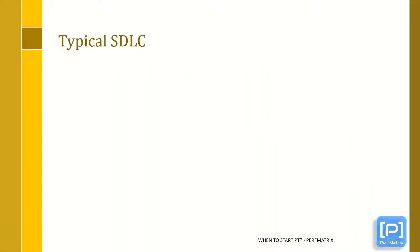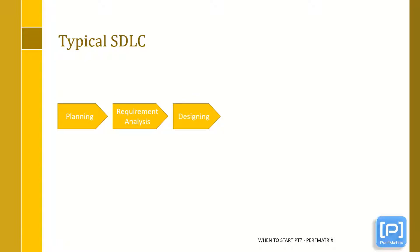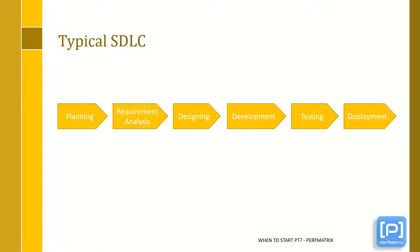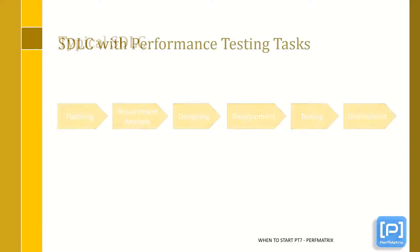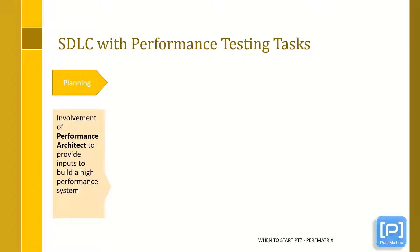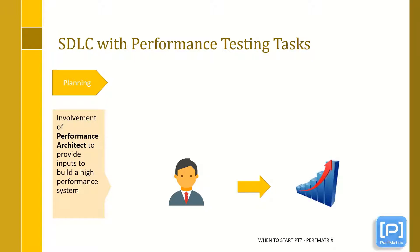Let's have a look at a typical SDLC which has six major phases: planning, requirement analysis, designing, development, testing, and deployment. Now we will see at which point performance testing should be started. Since software development life cycle starts from the planning phase, it is a good idea to involve a performance architect at the initial phase of software development. His inputs in the beginning phase help to plan a responsive software system which can handle the desired load.